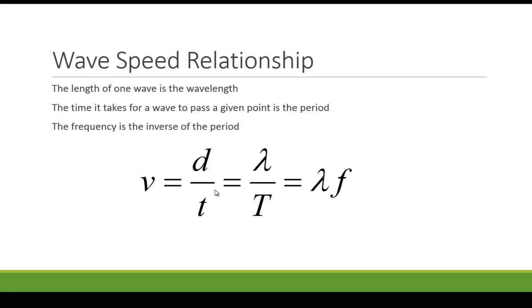First thing we're going to look at is the wave speed relationship, and so some definitions here. The length of one wave is defined as the wavelength. The time it takes for a wave to pass a given point is the period of the wave, and the frequency is the inverse of the period that we talked about before.